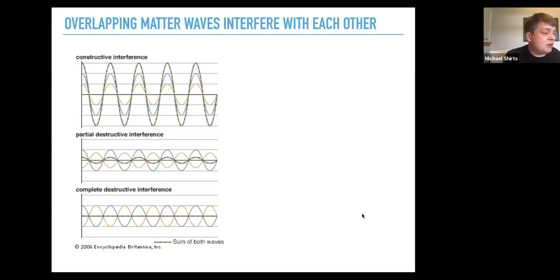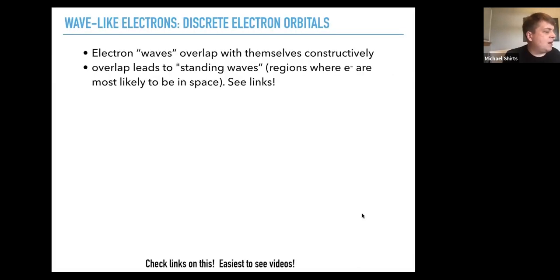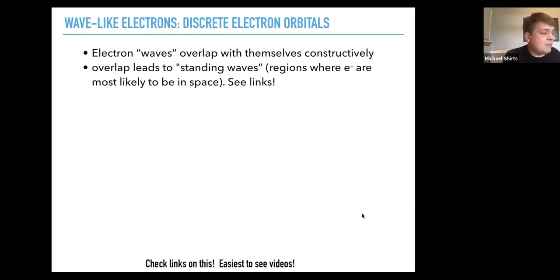So remember overlapping matter waves, just the same as with overlapping light waves, interfere with each other. You get weird patterns that come up. And so let's take a look at what happens if we have a wave that's confined in 2D. So electron waves overlap with themselves constructively and these overlap leads to standing waves, regions where the electrons are most likely to be in space when they're in a small confined area. So an example in 2D, remember electrons are 3D.